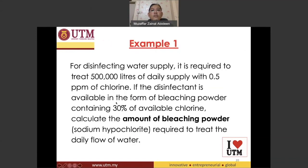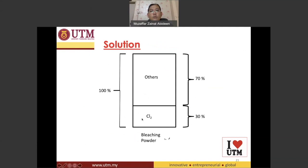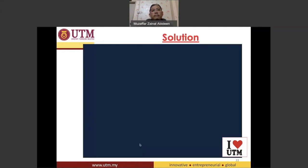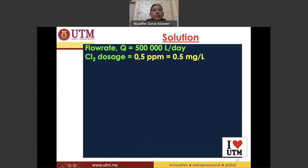They are asking for the amount of bleaching powder needed — what amount needs to be used per day at this particular water treatment plant that treats 500,000 liters of water in a day. The flow rate is 500,000 liters per day and the chlorine dosage is 0.5 ppm.